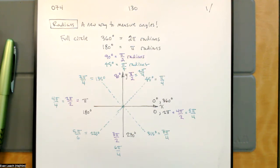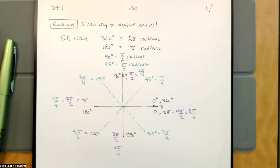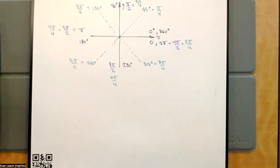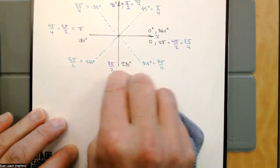We're going to divide 180 again. This time we're going to divide 180 by 3. So instead of cutting it in half and getting 90, we're going to divide by 3 and get 60. But we're also going to get a new picture, because it's getting a little crowded on this one.